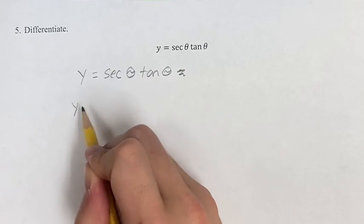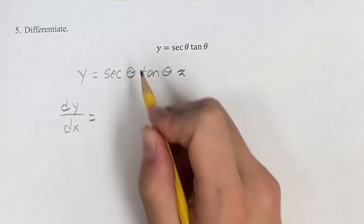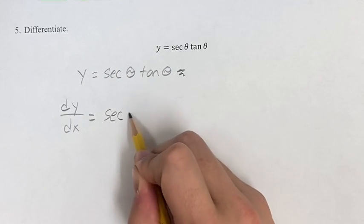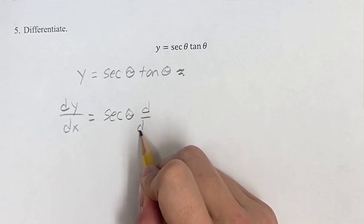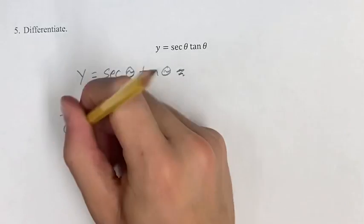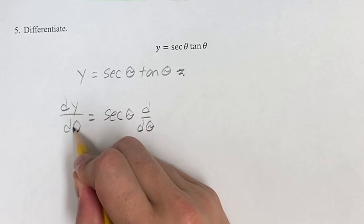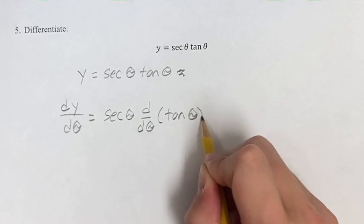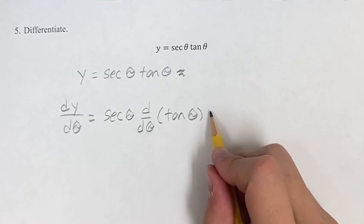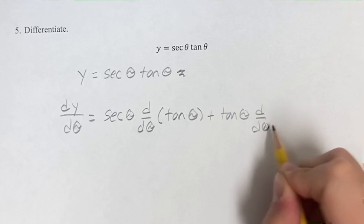So we're going to say our derivative dy d-theta is equal to the first term, secant theta, times the derivative of the second term. And also it should be dy d-theta right here, because we don't have x's, we have thetas. We're taking the derivative of our second term, so the first times the derivative of the second term, plus the second term times the derivative of the first term.